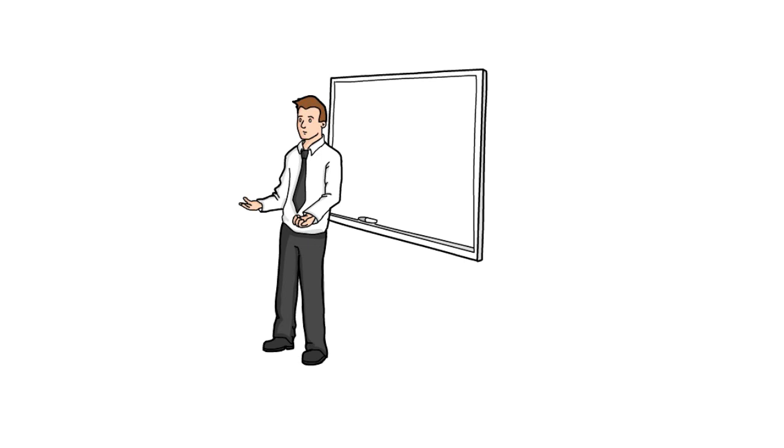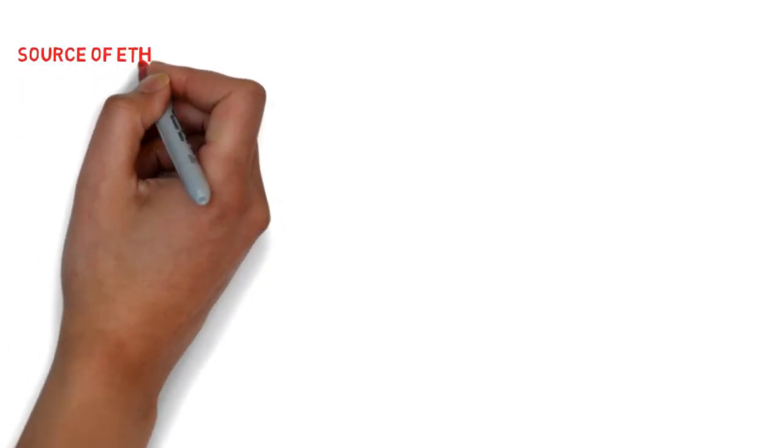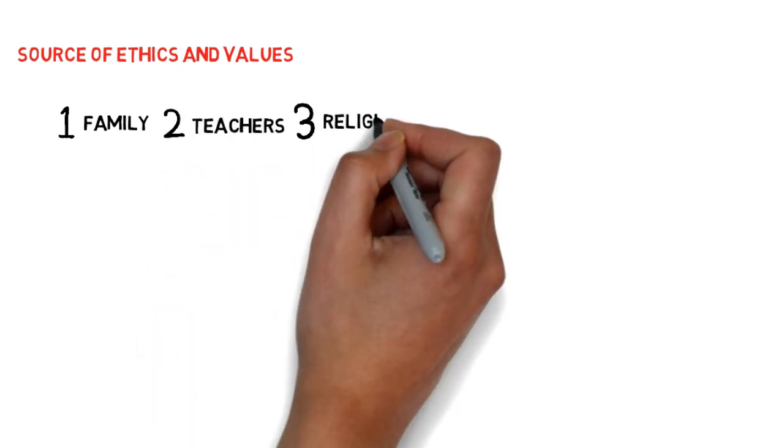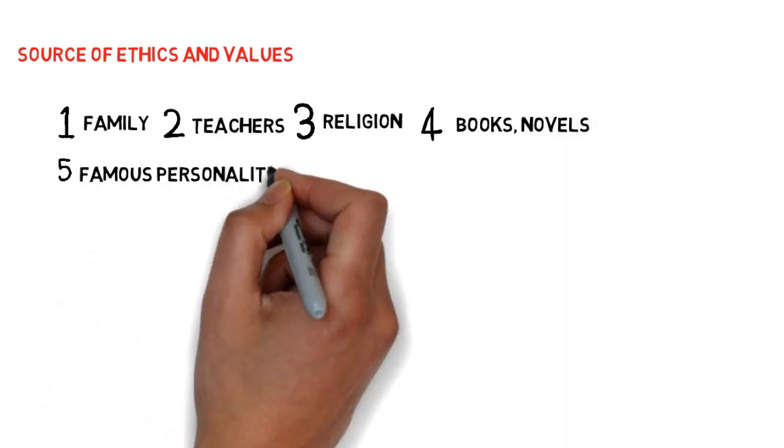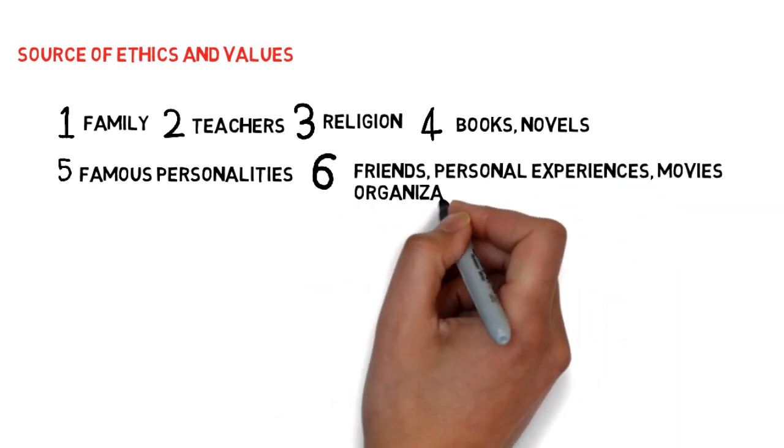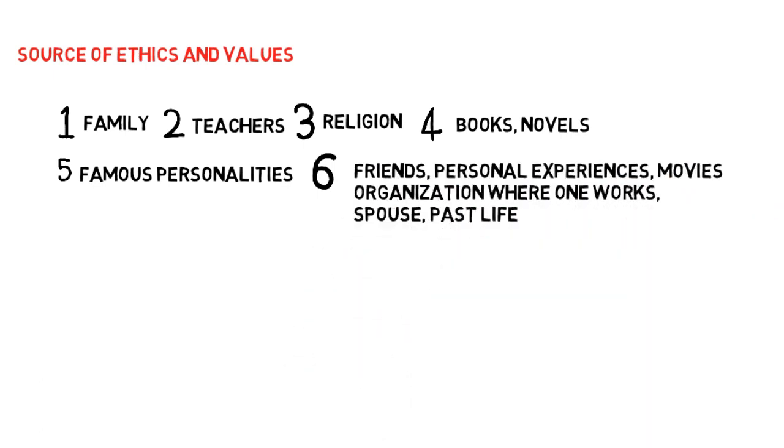But whatever it is, it affects life, yours and of those around you. One survey has shown that the biggest source of ethics and values is family, then teachers, then religion, then books and novels, famous personalities, friends, life, movies, organizations where one works, past life, and spouse.